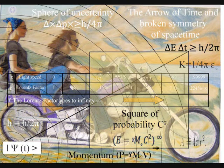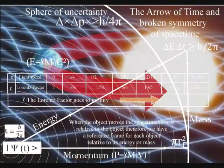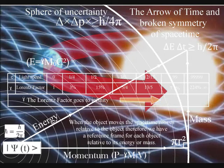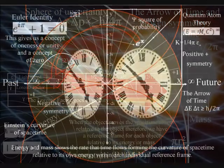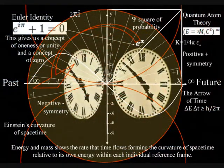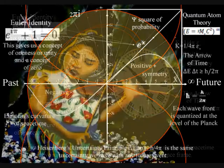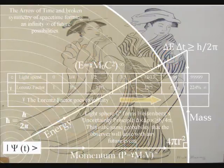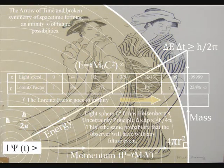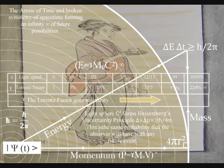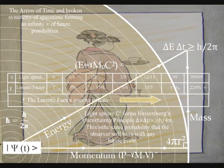This theory might sound very far-fetched, but it is only extending Einstein's theories of relativity to objects and individuals in our everyday life. In relativity, objects slow down the rate that time flows relative to their energy or momentum. This is an interactive process that changes the curvature of space-time. In this theory, we all form our own future by slowing down the rate that time flows relative to our energy and momentum, or in other words, relative to our actions.